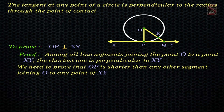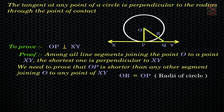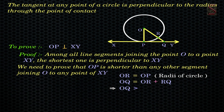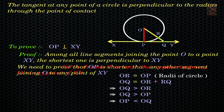Let R be the point at which OQ meets the circle. Then, as OR and OP are the radii of the circle, they are equal. Now OQ equals OR plus RQ, which implies OQ is greater than OR. But OR is also equal to OP, so OQ is greater than OP, that is OP is less than OQ. Thus OP is shorter than any other segment joining O to any point of XY. Hence OP is perpendicular to XY.